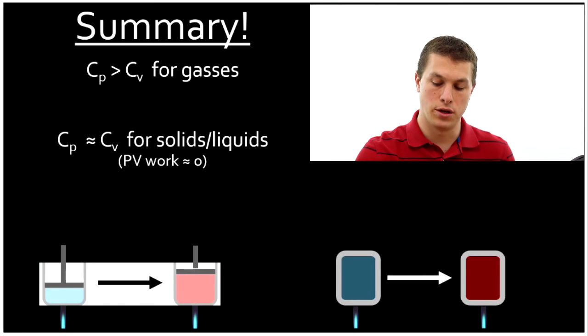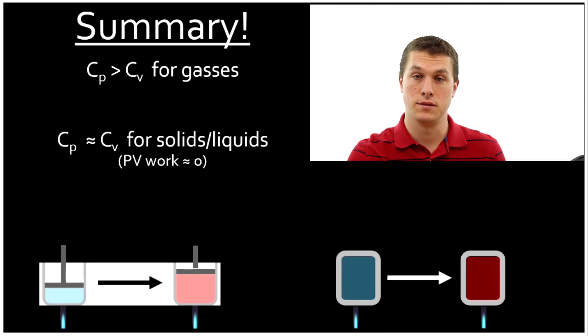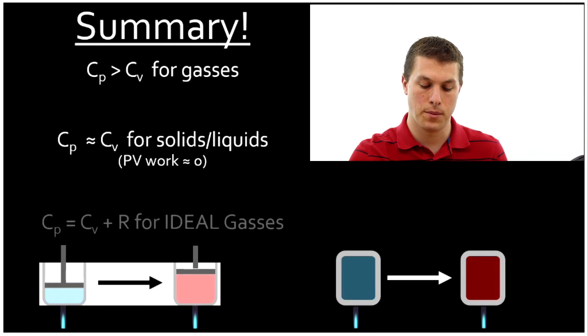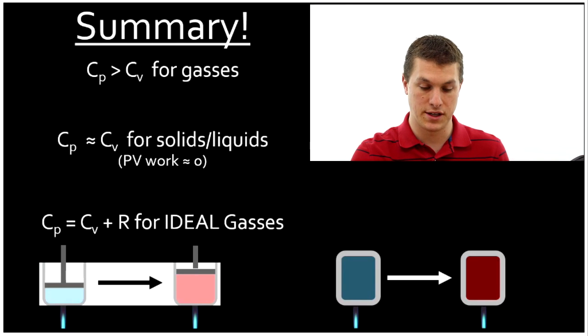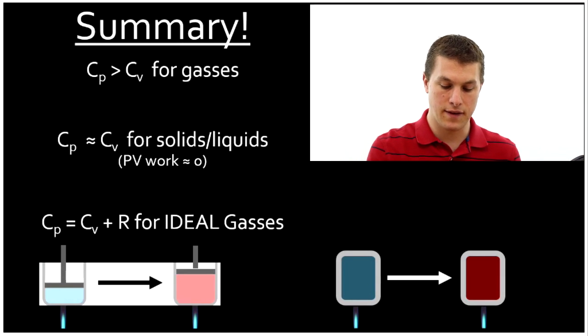The last important point to note is there's a relationship between heat capacity at constant pressure and heat capacity at constant volume for ideal gases. And this will come up in problems over and over again. So the heat capacity at constant pressure is equal to the heat capacity at constant volume plus R, which is the gas constant. So if you're given CV for an ideal gas, you have CP. If you're given CP for an ideal gas, you have CV. All you have to do is add R, the gas constant.